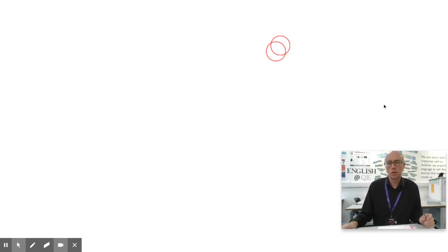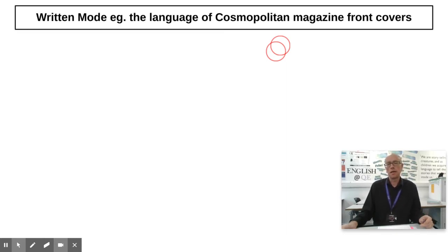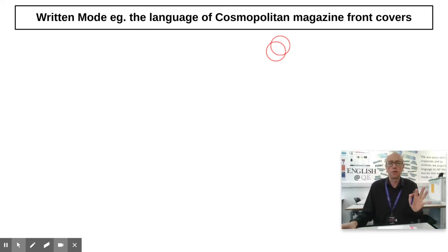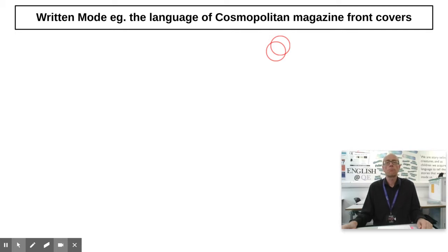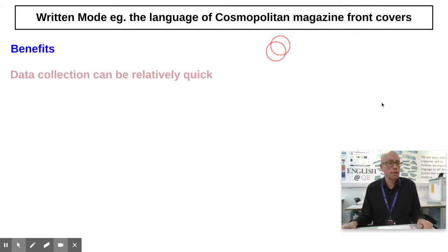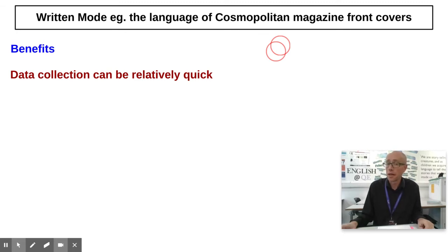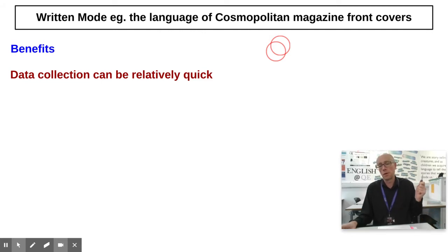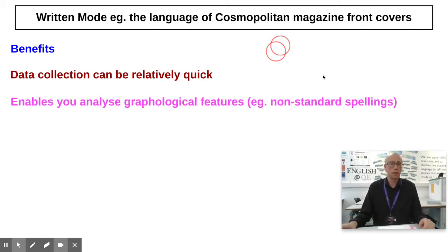Now let's turn our attention to writing — something like the language of Cosmopolitan magazine front covers. Pause the video and think: what are some of the benefits of doing a language investigation on written texts? The data collection for writing can be very quick — for Cosmopolitan magazine front covers, you could get onto Google Images very quickly and collect the data fast.